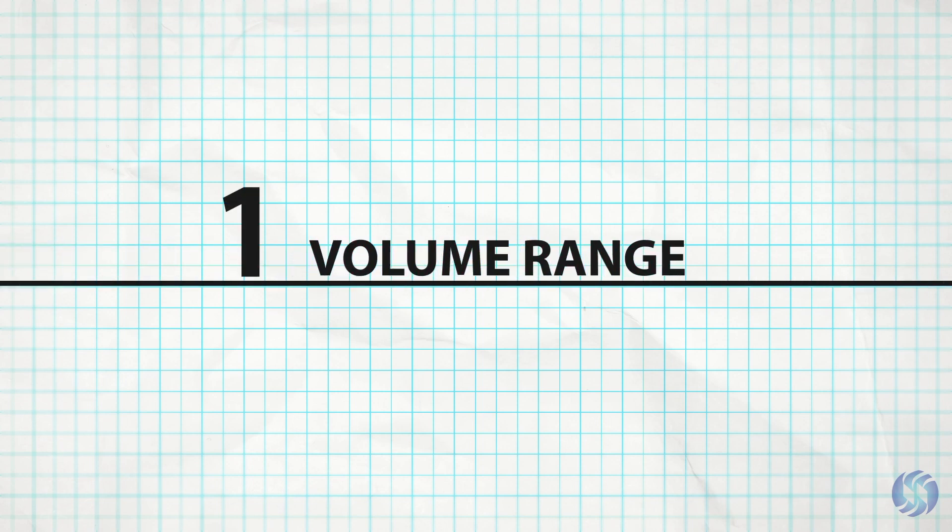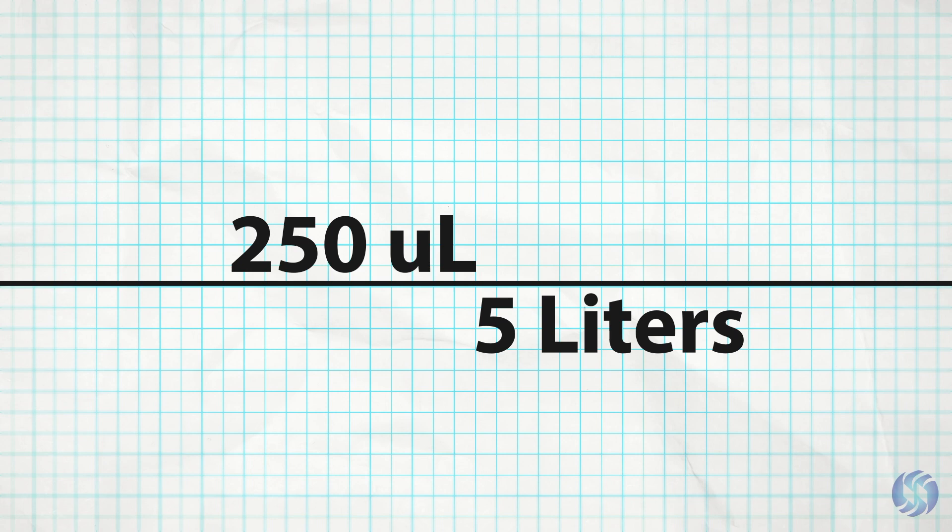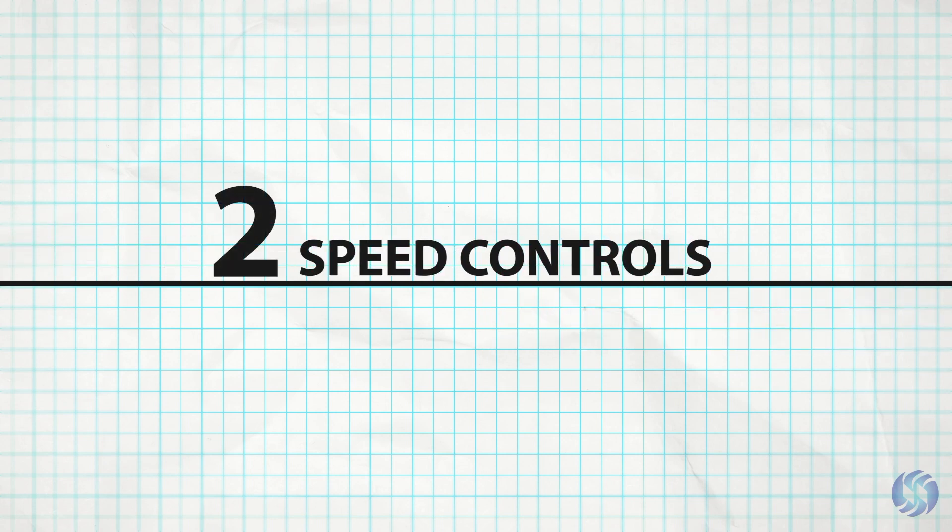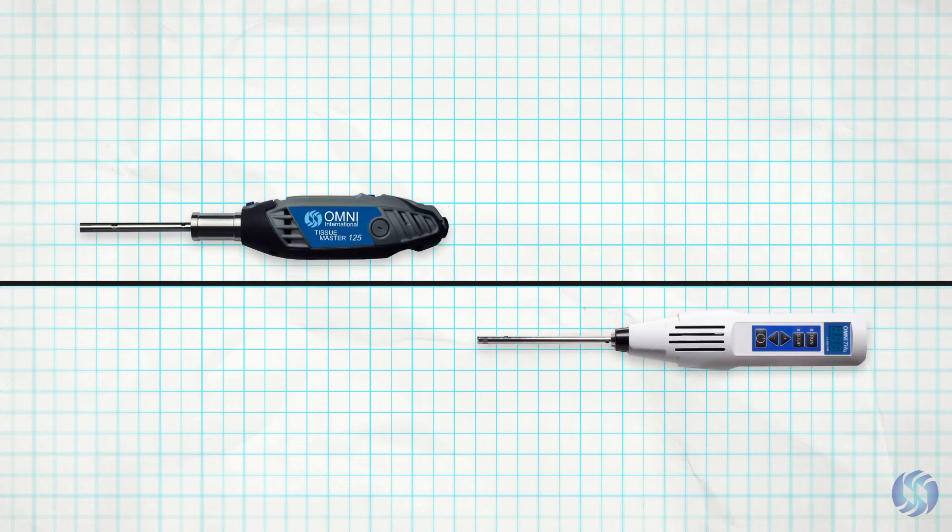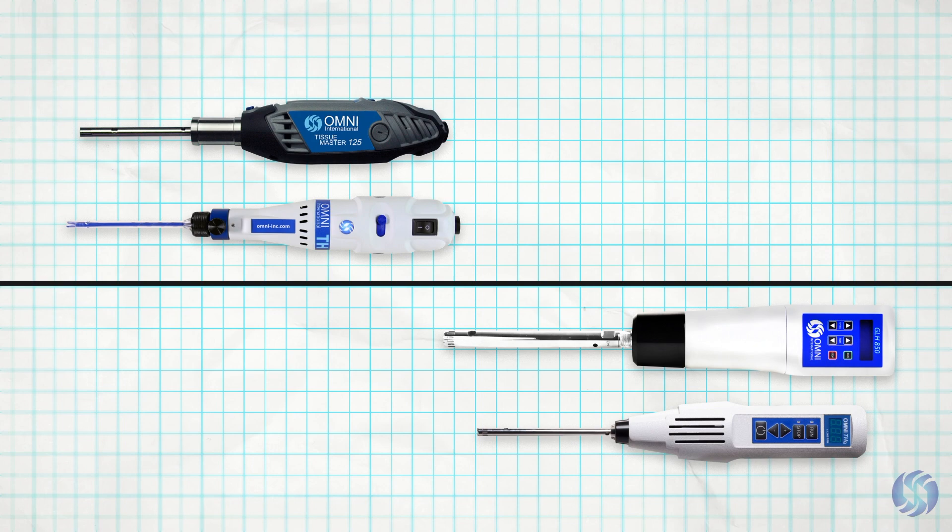Omni offers several rotor stator homogenizer options capable of processing volumes ranging from 250 microliters to 5 liters. Once the volume range is identified, the next critical factor is determining if analog or digital speed controls are desired. Choose the homogenizer model that works best for your lab's applications.